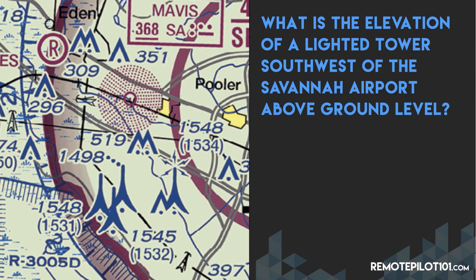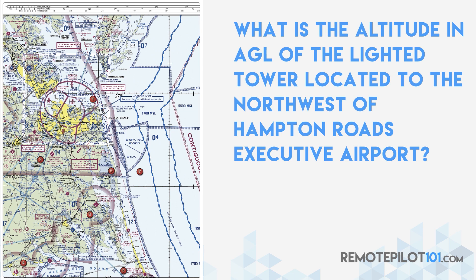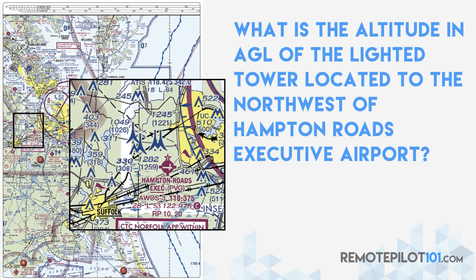You might get a question asking: what is the altitude in AGL of the lit object six miles southwest of the Savannah Airport? There's an excerpt from the sectional chart to refer to. This is a very popular actual exam question. You need to be careful with those types of questions — did they ask for MSL, or did they ask for AGL? Because both those numbers are on the sectional chart. You might be asked: what is the altitude in AGL of the lit tower located northwest at the Hampton Roads Executive Airport? Remember, legend one is very valuable to use as a key.